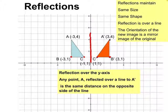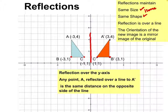A reflection keeps the same size and same shape, so a reflection is also an isometry. Isometry means same size and same shape for any transformation.